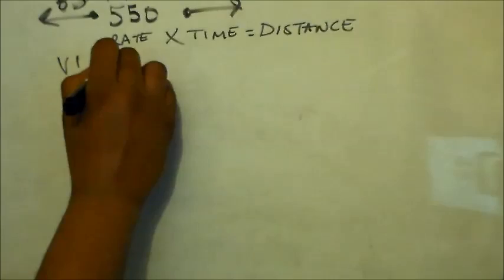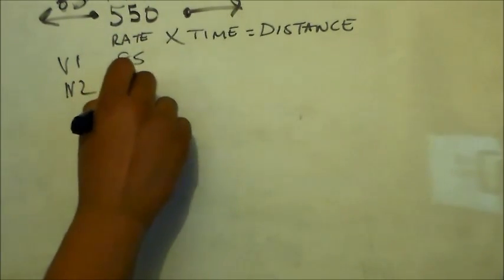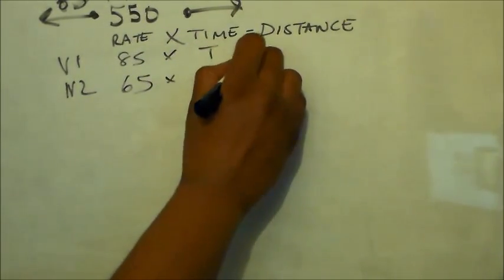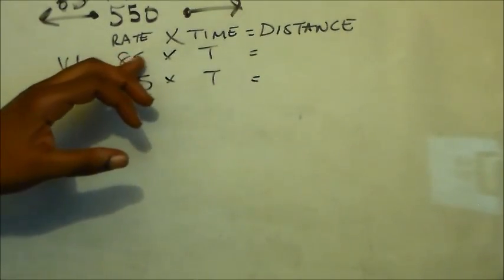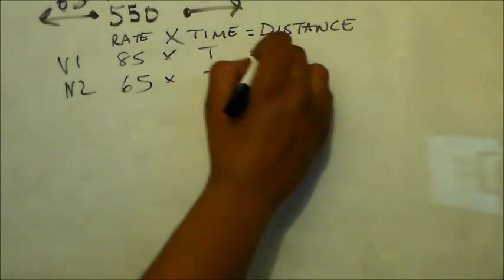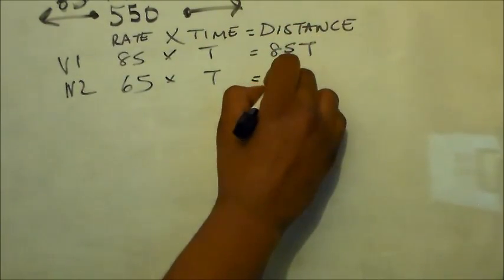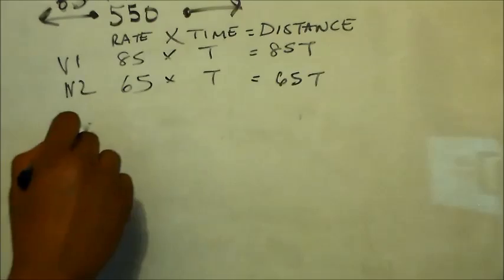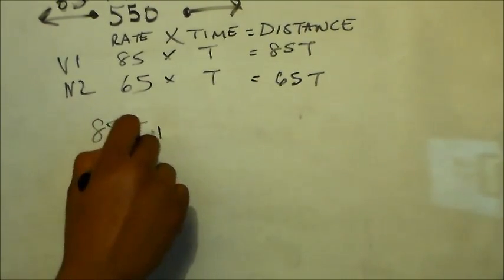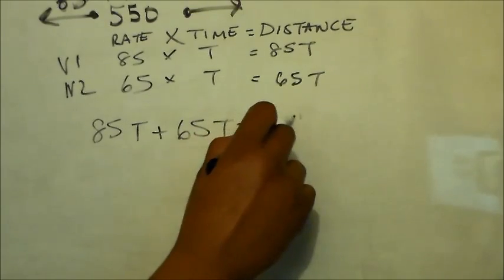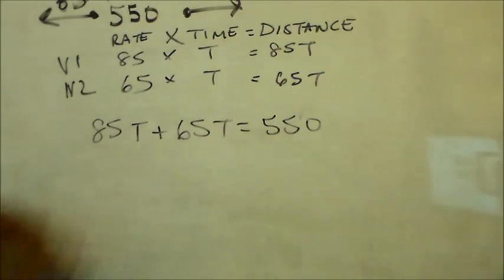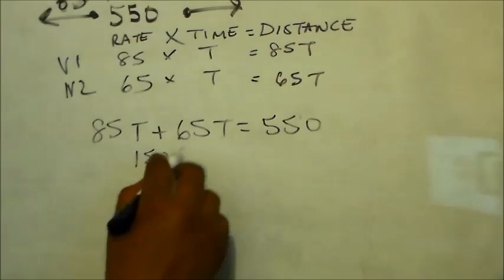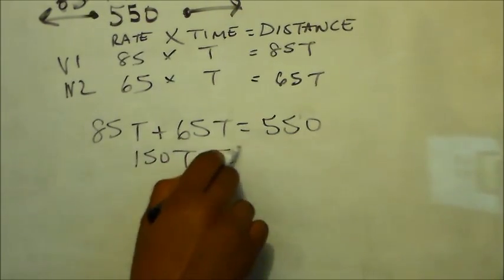Vehicle one's rate is 85. Vehicle two's rate is 65. We don't know what the time is — that's what we're trying to find. Rate times time equals distance, so we come up with two expressions: 85T and 65T. So 85T plus 65T equals 550.